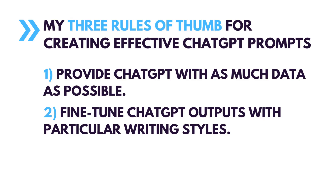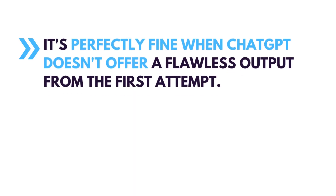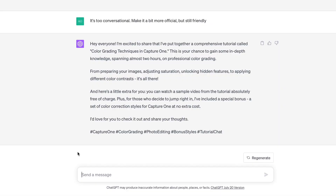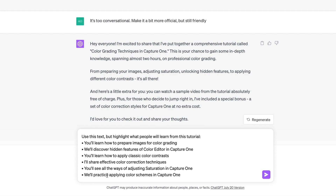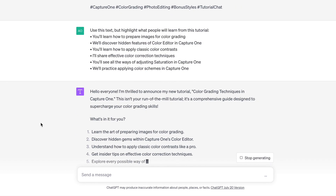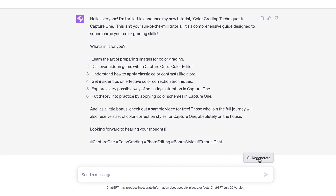And here is the third rule I follow: always ask ChatGPT to adjust the initial output. It's perfectly fine when ChatGPT doesn't offer a flawless output on the first attempt. You need to explain to the chatbot what you expect to get, just as you clarify your requests to real people. In the case of this post, I'm going to ask ChatGPT to highlight what people will learn from this tutorial.